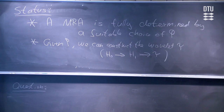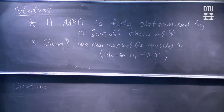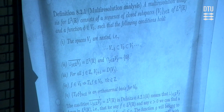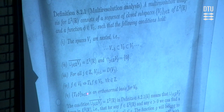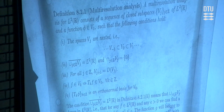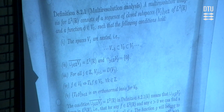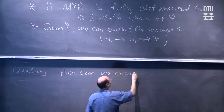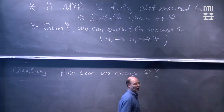You say we have a problem about how to find φ, and this is exactly what I wanted to hear. If you look at the definition of the multiresolution analysis, we just know that all the conditions stated here are given just by a good choice of the function φ, but we don't know how to take good functions φ such that the last condition is satisfied and the spaces we are dealing with also satisfy the first conditions. So the question is, how can we choose φ? We don't know anything about that yet.